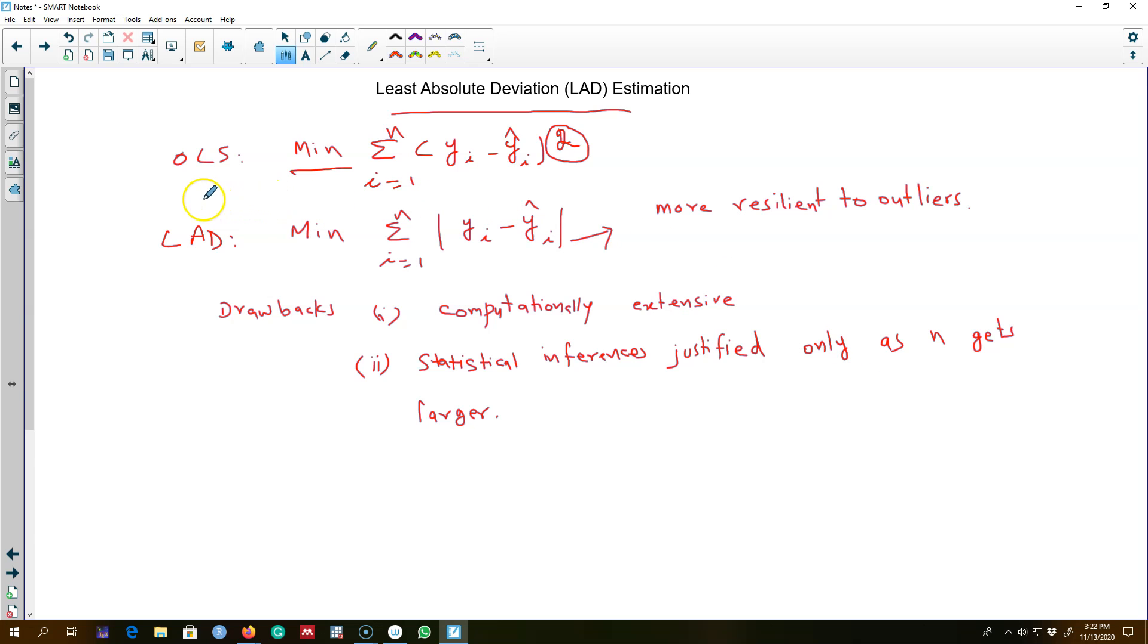In the previous video we saw that OLS was very sensitive to the inclusion or exclusion of these outliers. So least absolute deviation, instead of minimizing the square of residuals, minimizes the absolute value of residuals. It's more resilient to outliers but is computationally extensive and its statistical inferences are justified only when the number of observations gets larger.